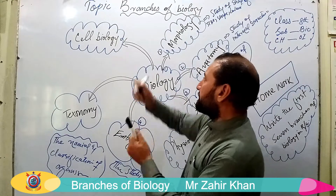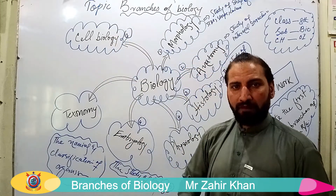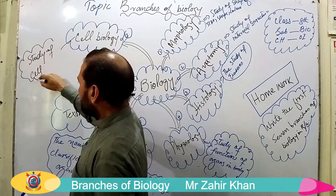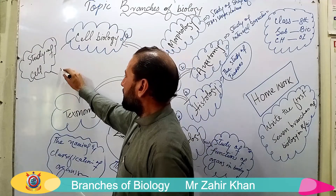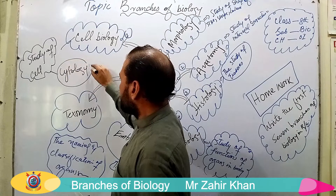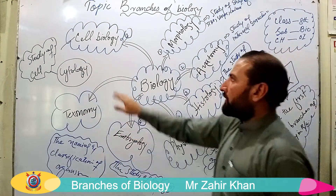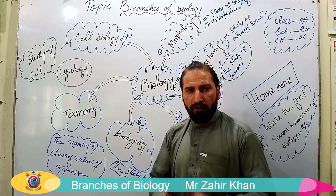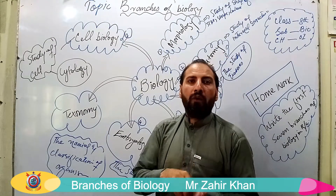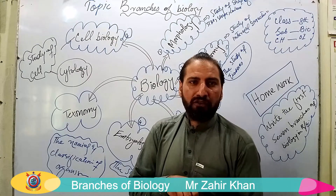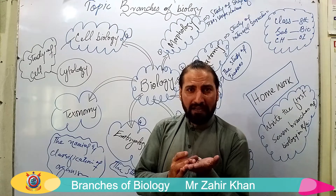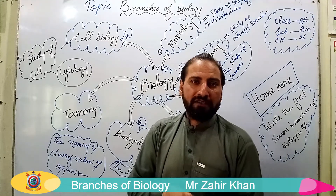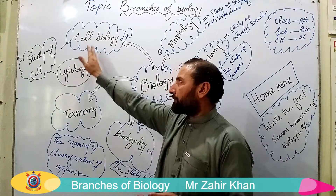The seventh branch of biology is cell biology, which simply means the study of cells. It is also called cytology. Cell biology is the branch of biology which deals with the study of cells. A cell is the basic structural and functional unit of all living organisms. In cytology we study how a cell is formed, what different structures exist inside a cell, and what functions they perform.